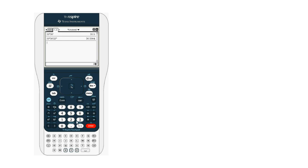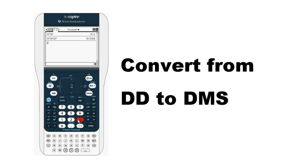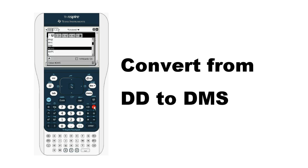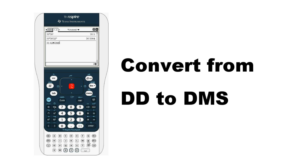To go from decimal degrees to degrees, minutes, and seconds, first enter your angle in decimal degrees. There is no need to use the degrees symbol. Next, select the Catalog button, which looks like an open book. Press D to skip down quickly to the DMS function. It will convert your answer to degrees, minutes, and seconds.